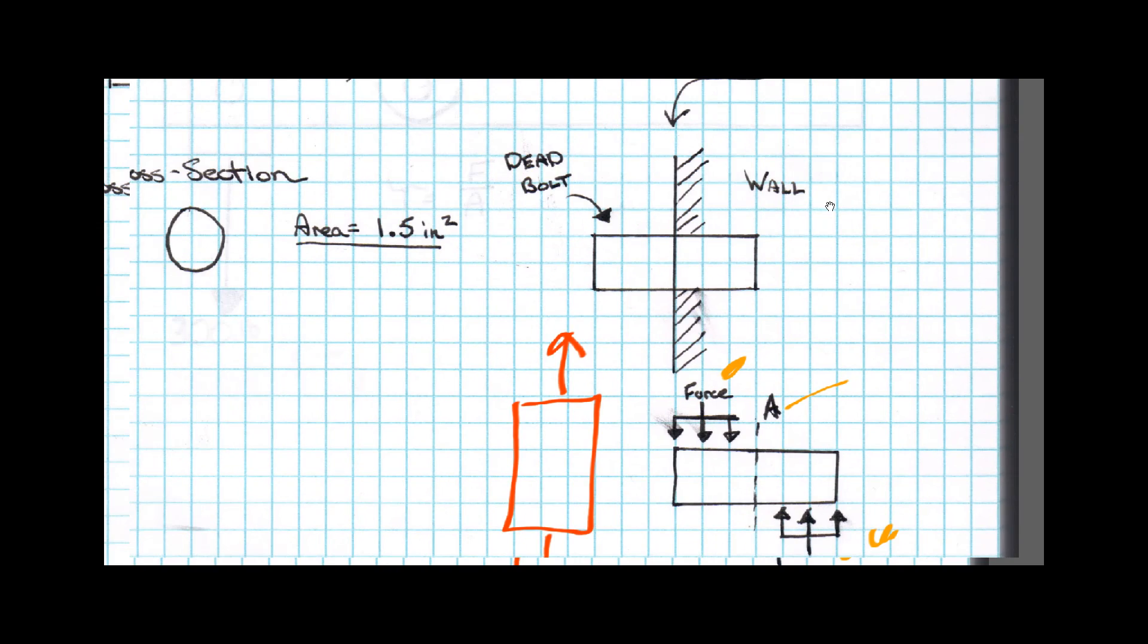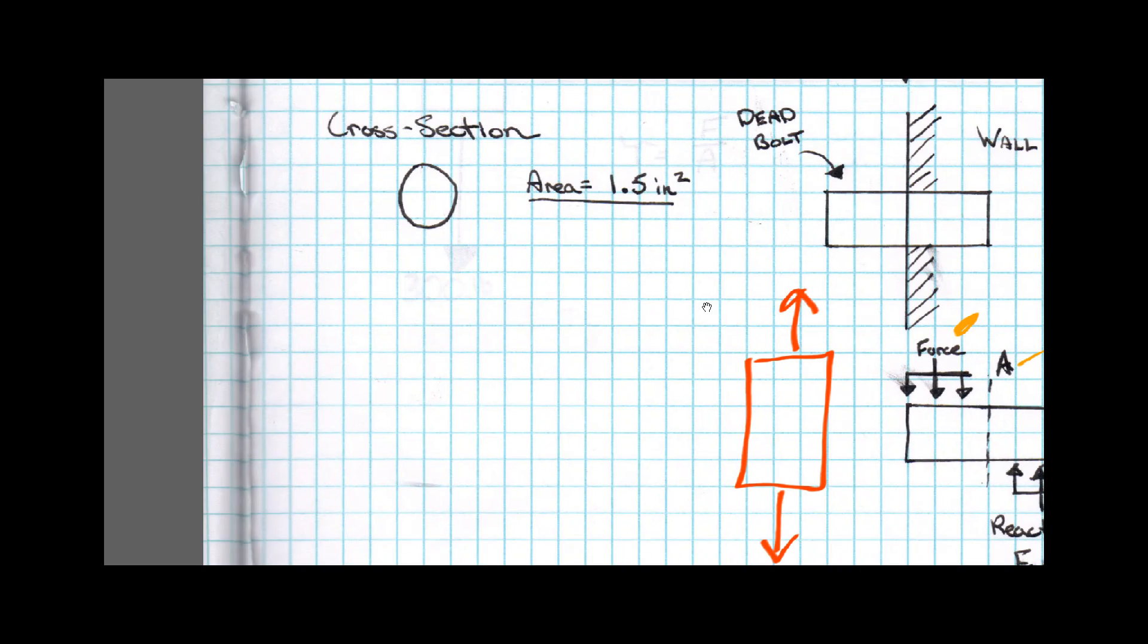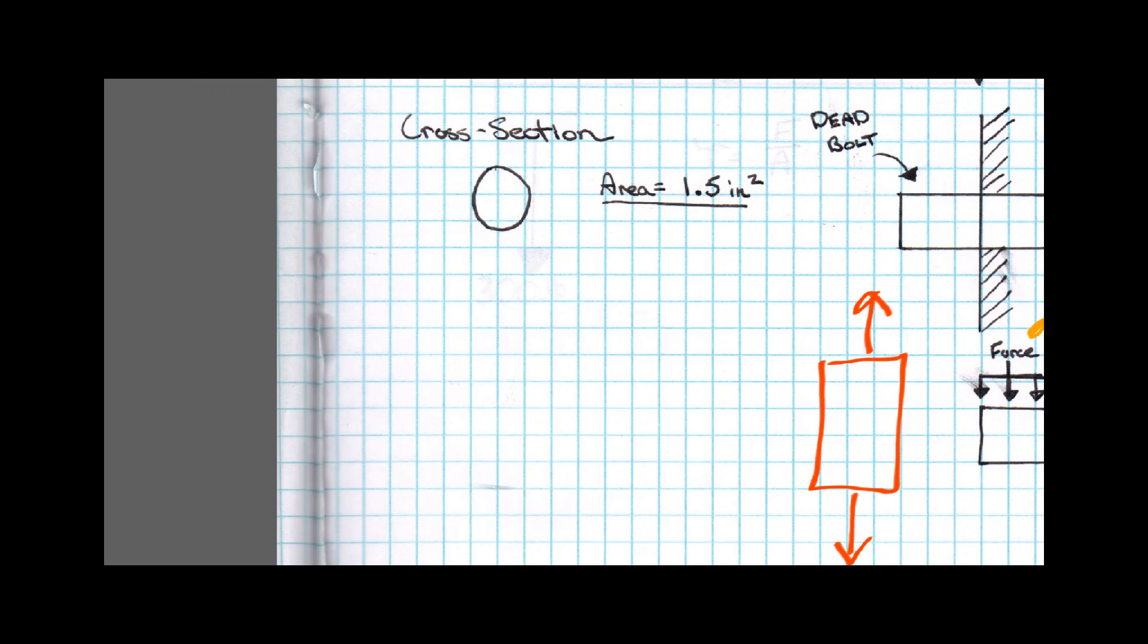So anyway, using that equation above, it should be fairly simple that shear is equal to force over area. I've already given us the area here because we all know how to calculate area. So I'm just going to calculate it out. It's 75 pounds over 1.5 inches squared. And that equals 50 psi. And that's pounds per square inch.